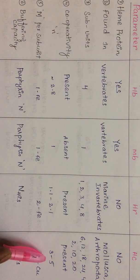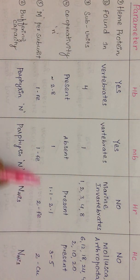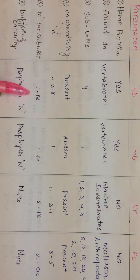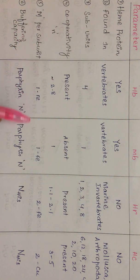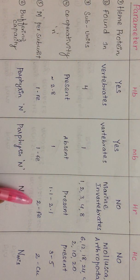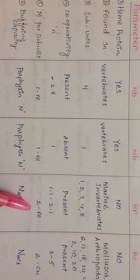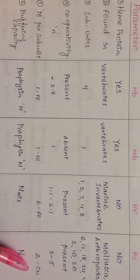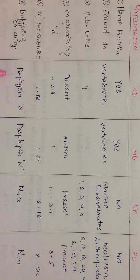Regarding number of metals per subunit: in hemoglobin as well as myoglobin, we find only one iron per subunit. Whereas hemerythrin and hemocyanin are bimetallic centers — hemerythrin has two irons and hemocyanin has two coppers per active site.